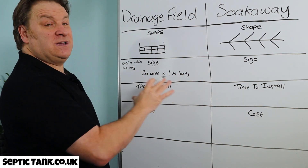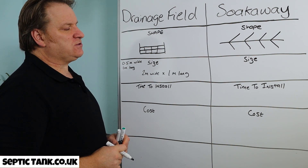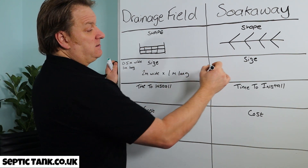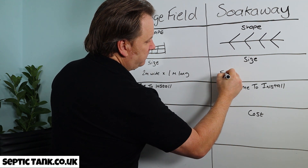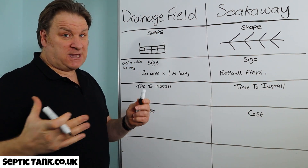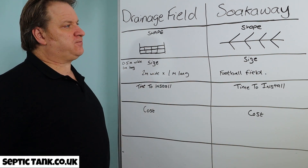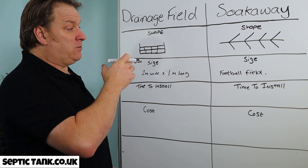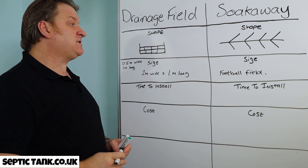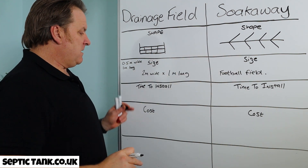So you can see they're quite small holes. Now with the old herringbone soak away systems, they could be crazy sizes — they can go up to the size of a football field, because the deeper they go, the bigger, wider, and deeper they have to be. Most of the herringbone systems installed for a three to eight bedroom house would wipe out your entire garden.